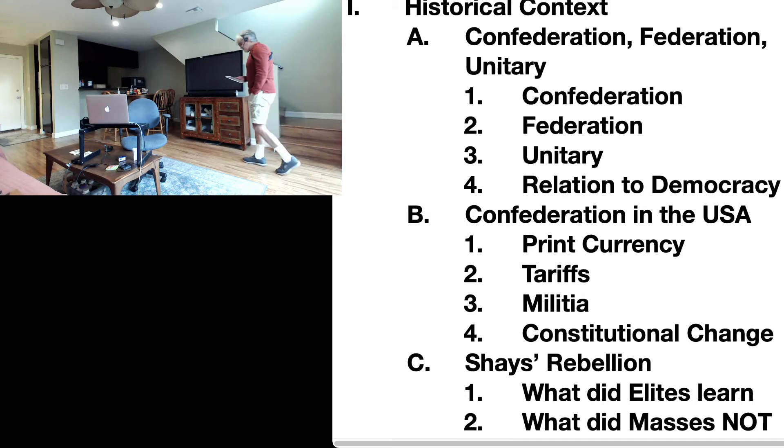All right, write it down. All three forms of government - Confederation, federation, unitary - have a central government and lesser governments. Sometimes they are known as states, as in the United States and Germany. Sometimes they are known as provinces as in Canada, and sometimes they are known as regions as in Russia.